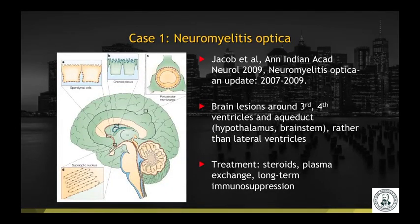This diagram shows that the brain lesions seen in NMO differ from multiple sclerosis in that they cluster around the third and fourth ventricles as well as the aqueduct, whereas lesions in multiple sclerosis tend to be along the lateral ventricles. Treatment involves steroids, plasma exchange, as well as long-term immunosuppression.